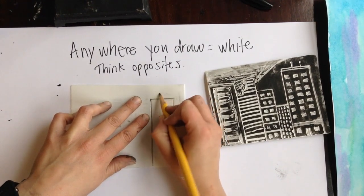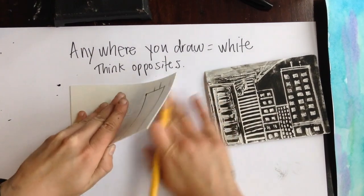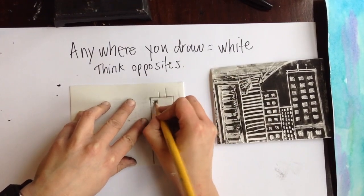If I want to add maybe some little towers, I could. Adding in windows. Again, if you want your windows to be white, you would fill them in.